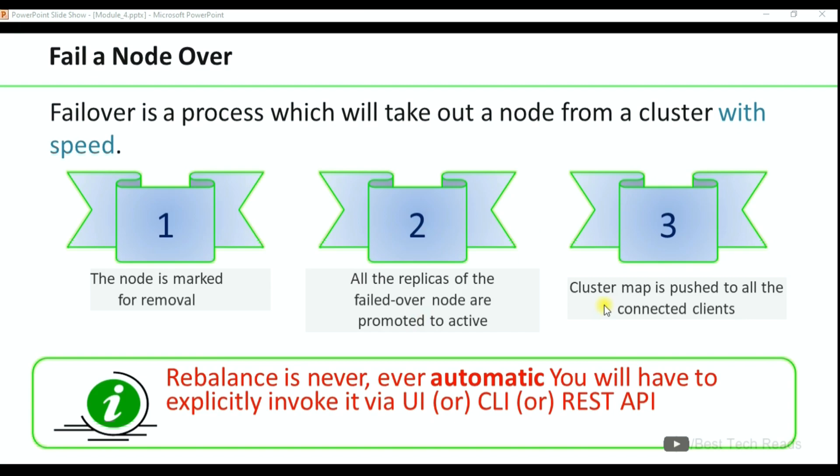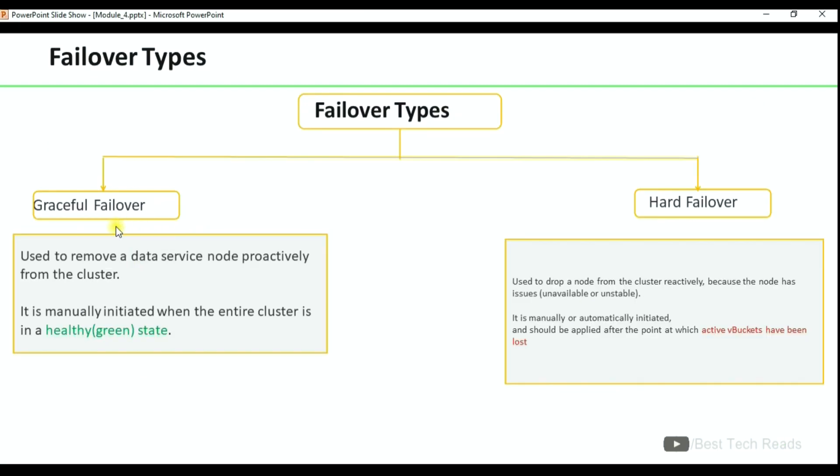Failover types: graceful failover and hard failover. Graceful failover is used to remove a data service node proactively from the cluster. It is manually initiated when the entire cluster is in a healthy state. We can choose graceful failover, however it is not recommended for production environment.